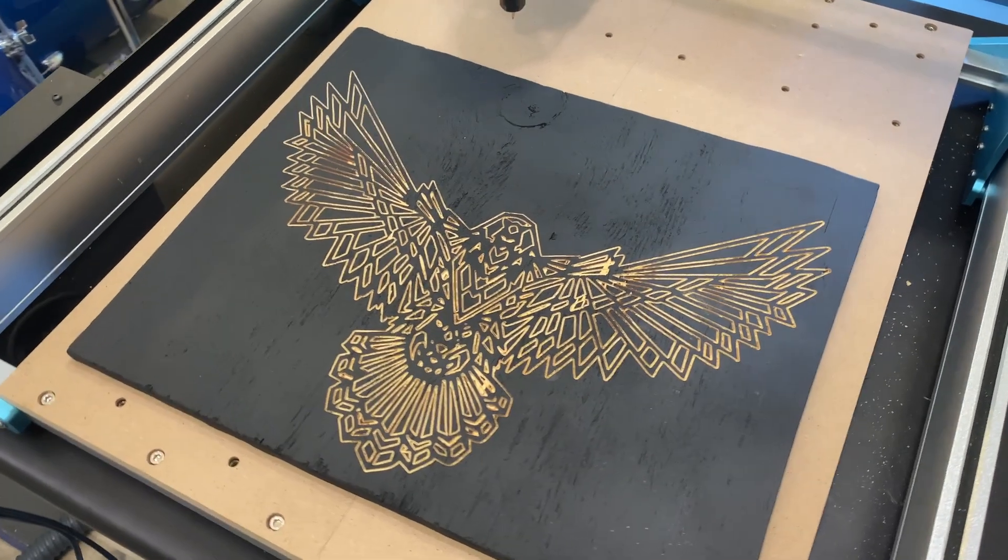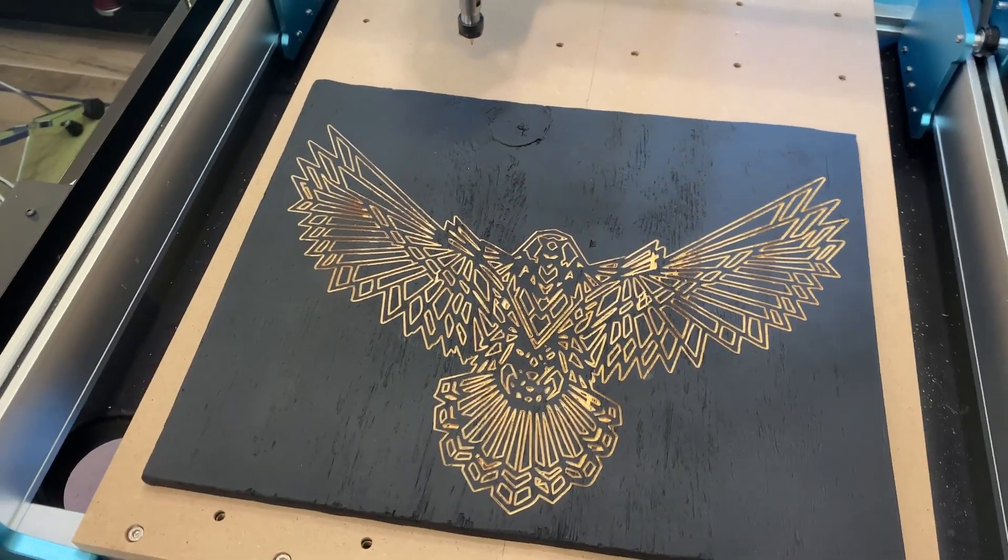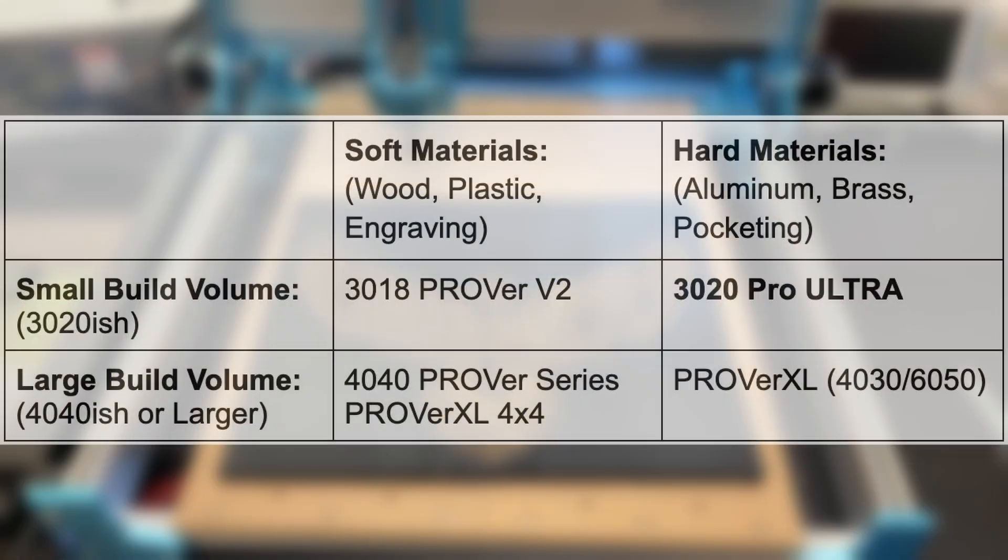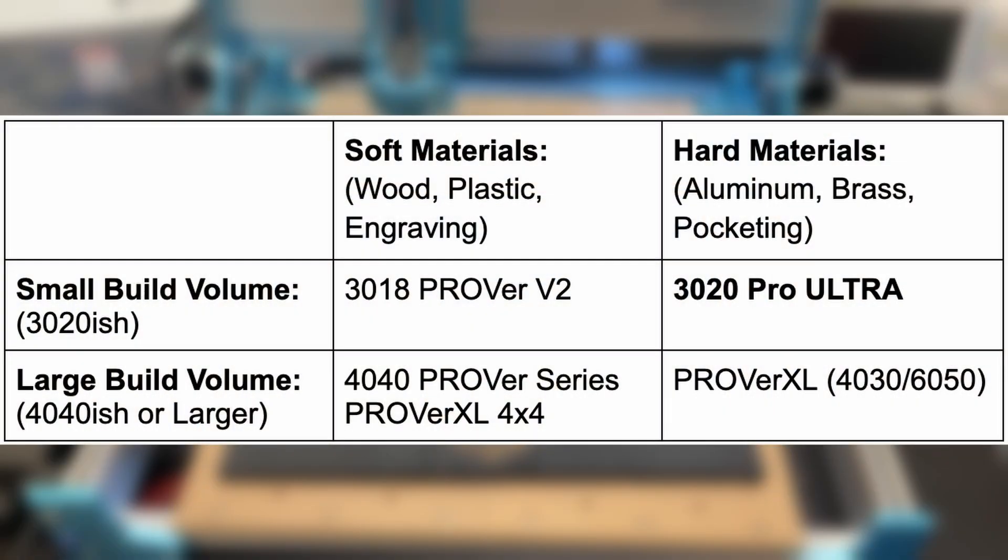If you're looking to make larger projects, or are only going to be making things out of softer materials like plastics or wood, here's a chart with my machine recommendations based on the type of project. As always, thank you for watching, and I'll catch you in the next video.